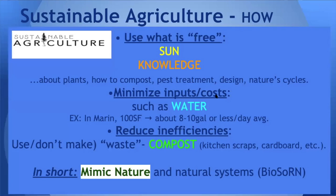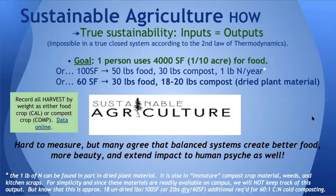So in sustainable agriculture, what do we do about these ABCs? We try to mimic nature — we try to do things the way nature does them as best we can, just with a little human involvement. We use what's free: we have sun that shines down, we have the knowledge we gain here. We also try to minimize the inputs we bring in — not use a lot of water, encourage the recycling of nutrients. We'll talk about that stuff all year long.